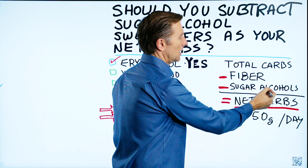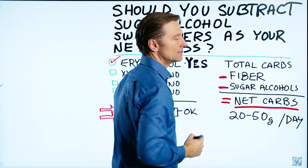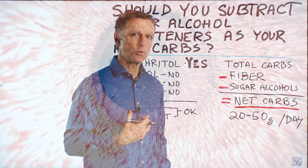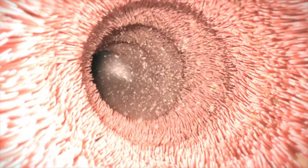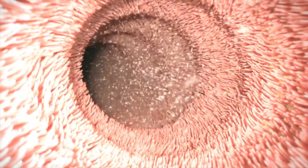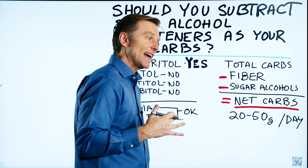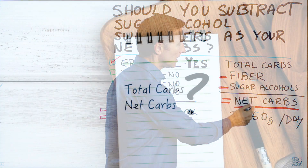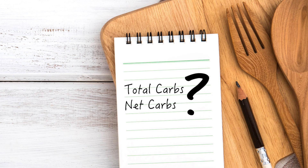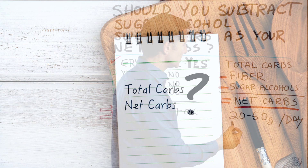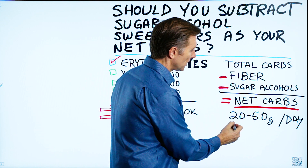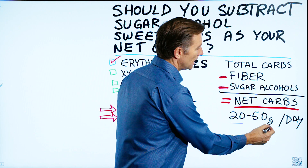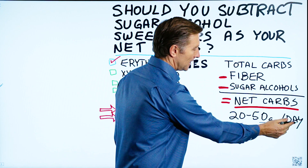In theory, sugar alcohols don't necessarily get absorbed in the small intestine or raise blood sugars. So the thought is, because they're not acting just like sugar, we can deduct those to get our net carbs. Net carbs are what you operate on in your calculations, because you want to keep your carbs between 20 and 50 grams per day.